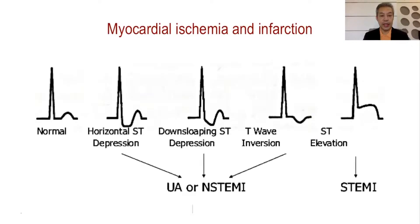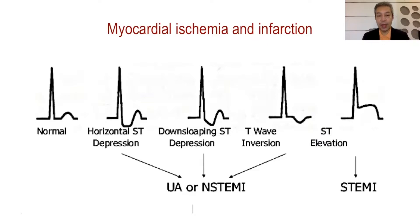The normal ST segment should be isoelectric and the T-wave should be upright. The exception will be that of AVR, where the T-waves should normally be inverted. In young patients in lead V1, we call this the juvenile T-wave pattern. It is normal to see T-wave inversion in lead V1 in younger individuals less than 35 years of age.